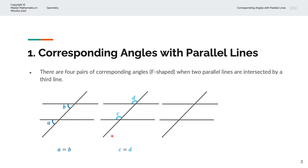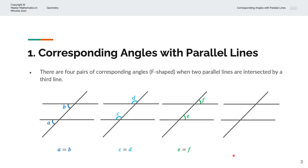The third pair is where you label this angle as E, and this angle, which is F, will be the corresponding angle — so E equals F. And finally, with the same set of lines, if we were to label this angle as G, the corresponding angle H will be identical to G, or G equals H. Again, we have two horizontal lines and one vertical line making up the F-shape.